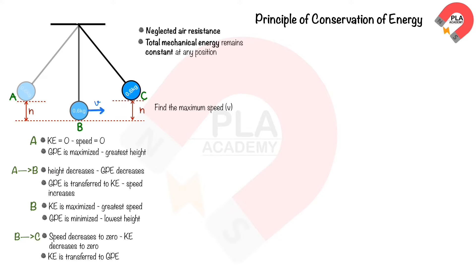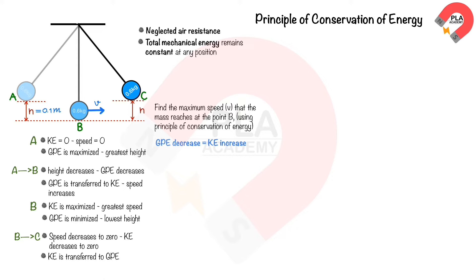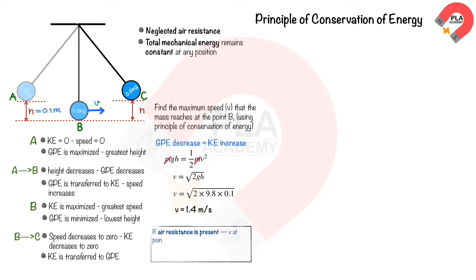To find the maximum speed v at point B, we apply conservation of energy, assuming a decrease in height from A to B of 0.1 meters. The decrease in gravitational potential energy equals the increase in kinetic energy: mgh = ½mv². Substituting m = 0.6, g = 9.8, and h = 0.1, we find v = 1.4 m/s. If air resistance is present, the speed at point B will be less than 1.4 m/s because some energy is lost to thermal energy.